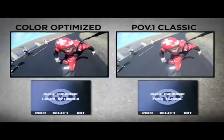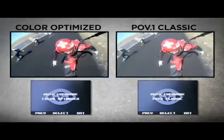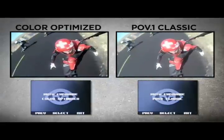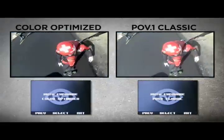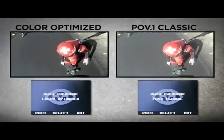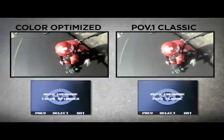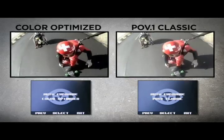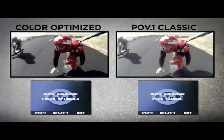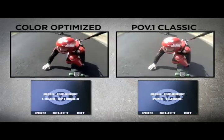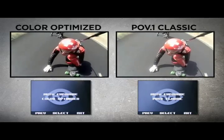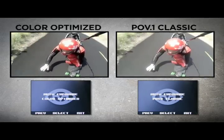The new Colour Optimised is a mode similar to the POV1 Classic but with a few improvements. This mode offers the best all-round colour and brightness accuracy. Use this mode as your all-purpose setting.